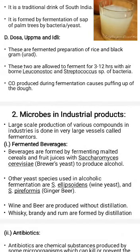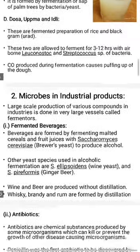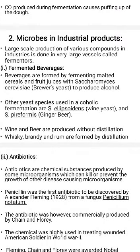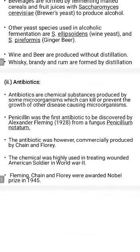Next, microbes in industrial products. Microbes are used for large-scale production of any types of products. Number one: fermented beverages. Some beverages are produced by the fungus Saccharomyces cerevisiae, also called brewer's yeast. Wine and beer are produced without distillation, while whisky, brandy, and rum are produced with distillation.